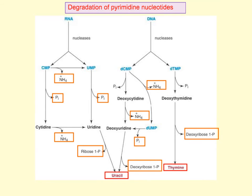The first part of pyrimidine degradation is basically breaking open the nucleotide to form uracil and thymine and releasing the sugar phosphate.